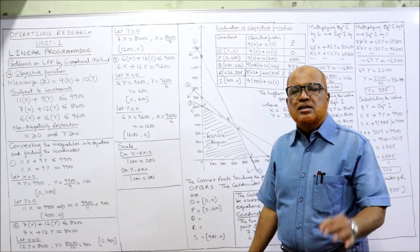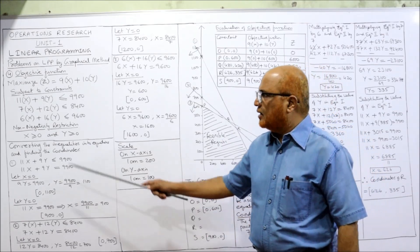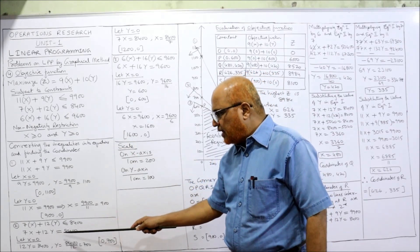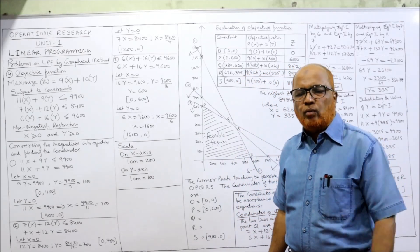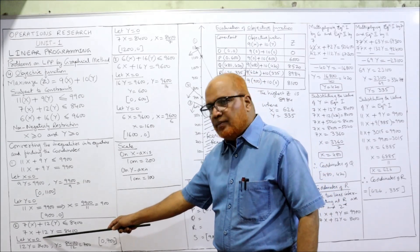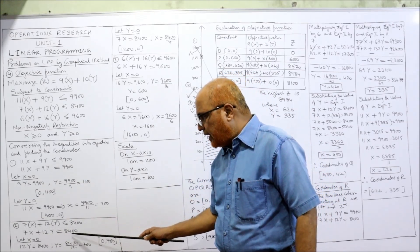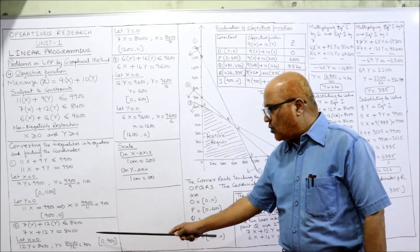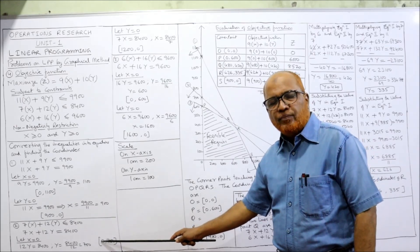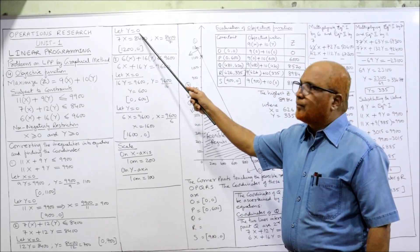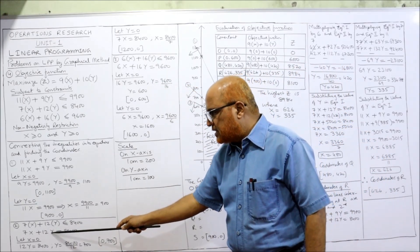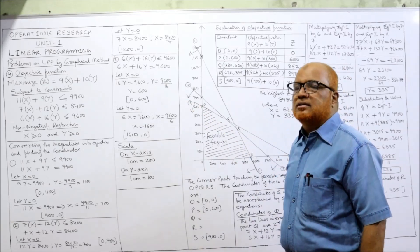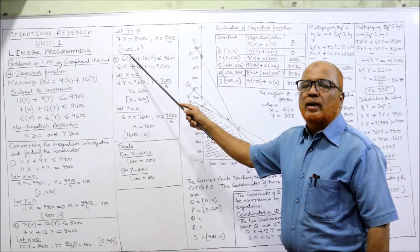Similarly, the second inequality 7x plus 12y ≤ 8400 becomes 7x plus 12y = 8400. When x = 0, then 12y = 8400, so y = 700. Coordinates: (0, 700). When y = 0, then 7x = 8400, so x = 1200. Coordinates: (1200, 0).